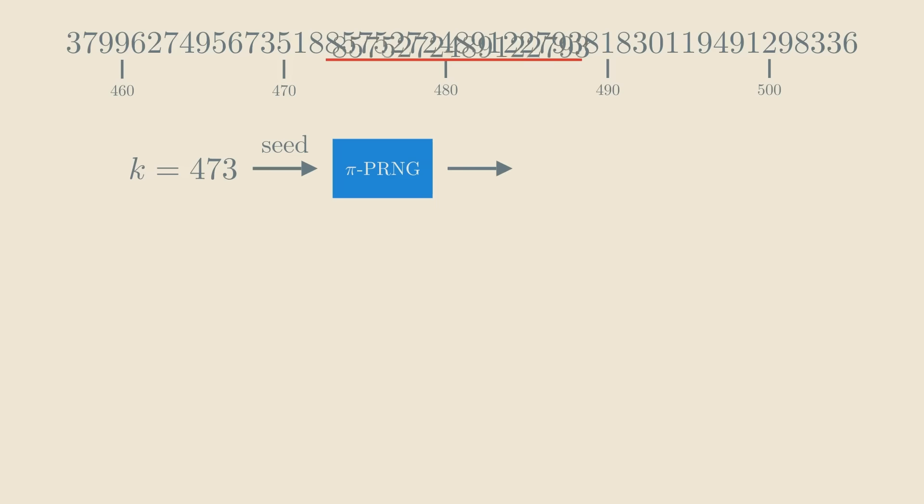If we want to generate n random digits, we'll choose the number k randomly between 1 and n to the 10th. That means that we'll go very deep into pi to generate our pseudorandom digits. This pseudorandom generator isn't practical because generating the first n to the 10th digits of pi would take a lot of time. But there is something very curious about it.